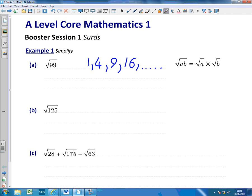And we then think which of those square numbers will divide into 99. Now 1 does, but that's not very useful. 4 doesn't, 99 is odd, but of course 9 does.